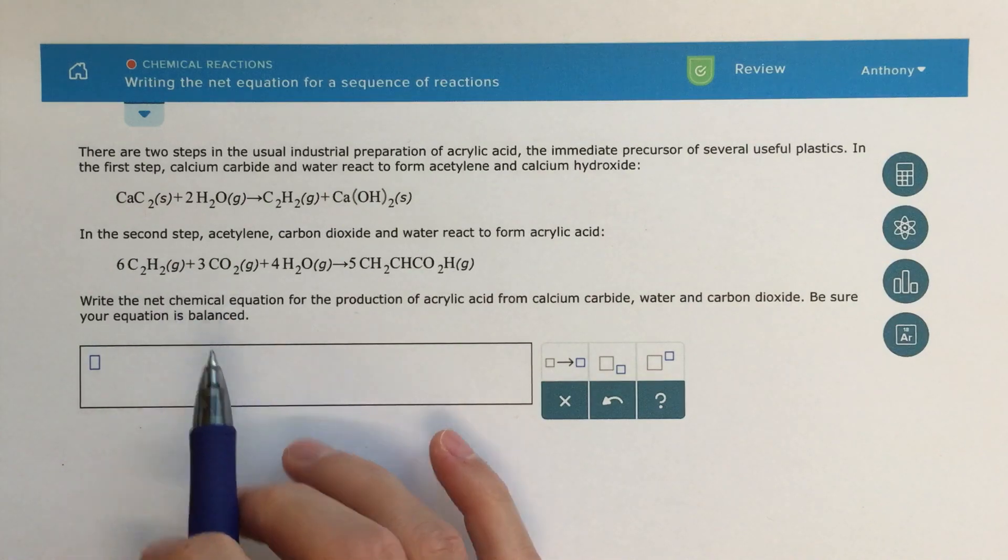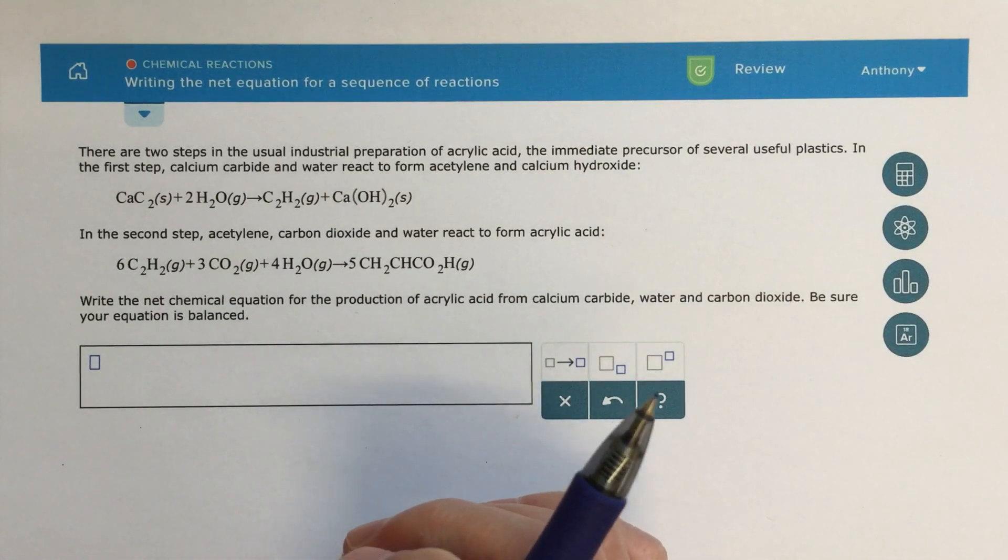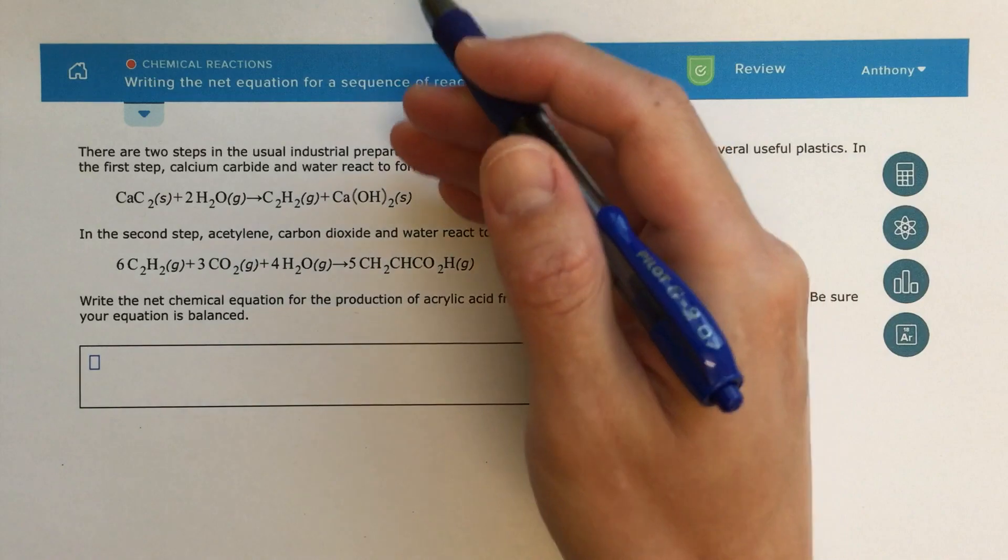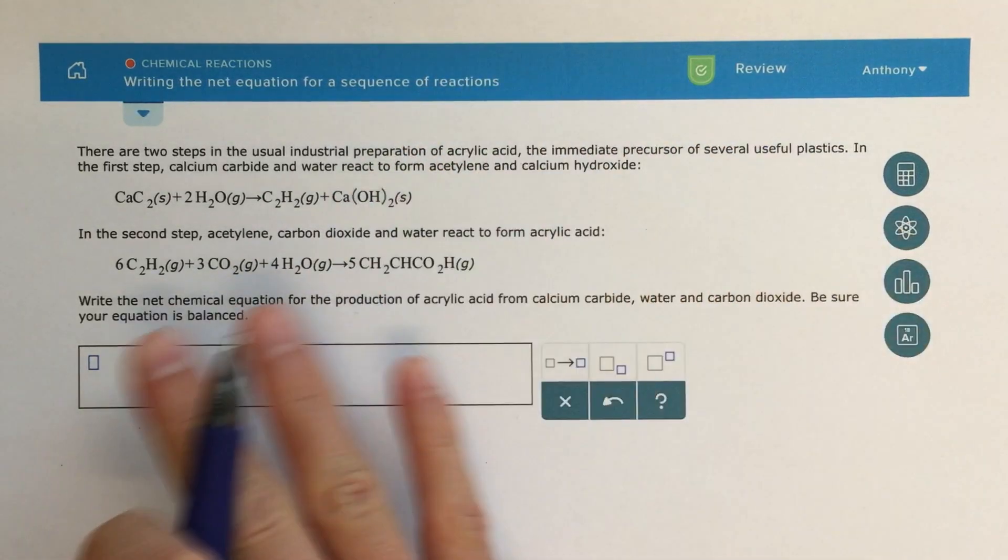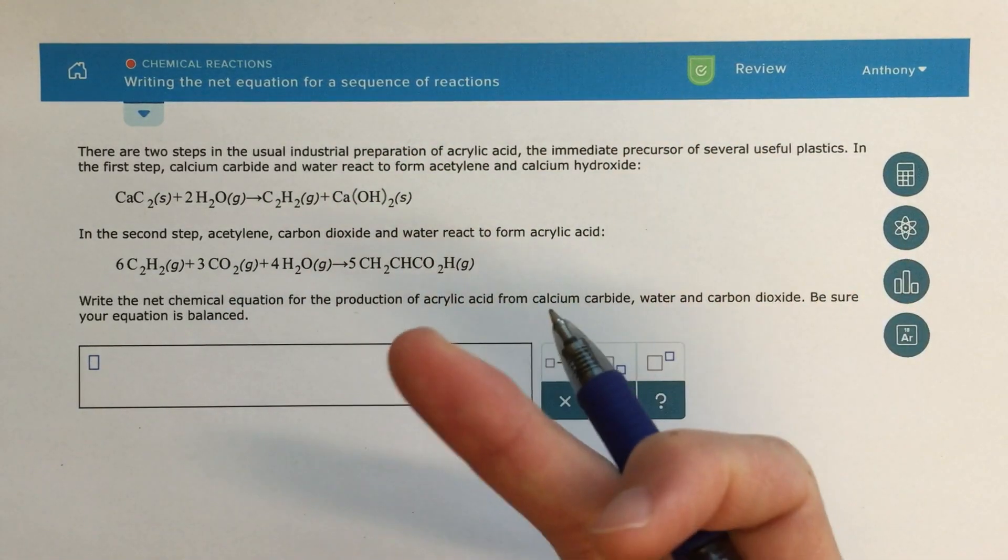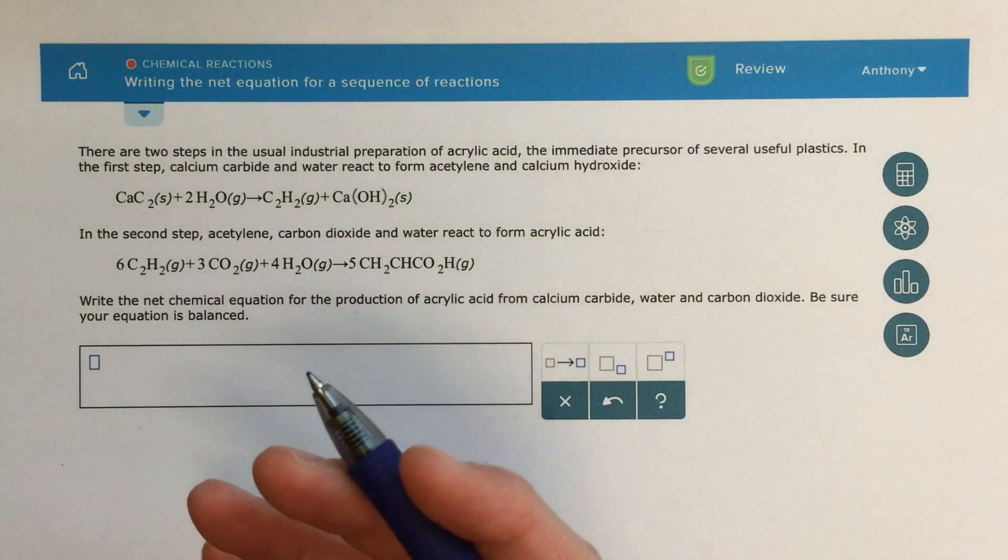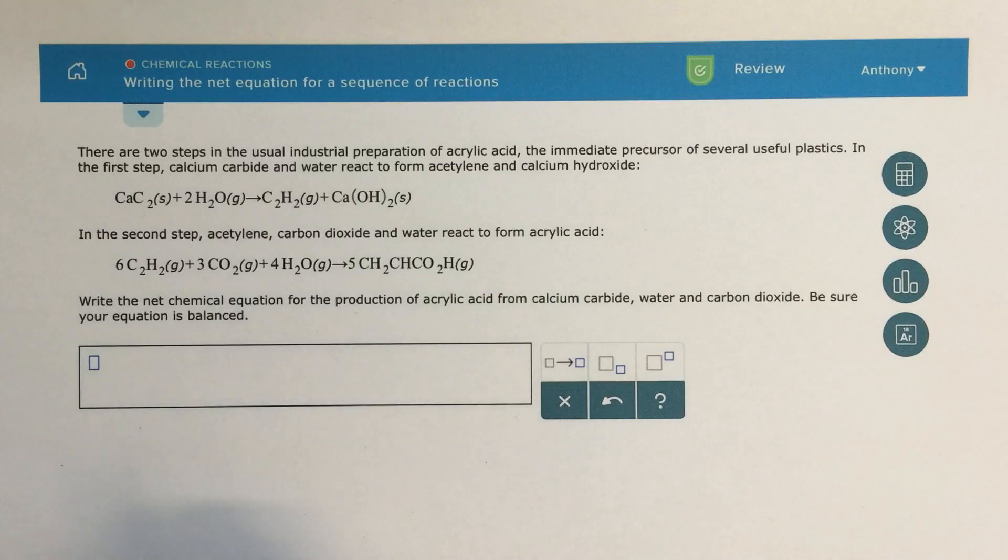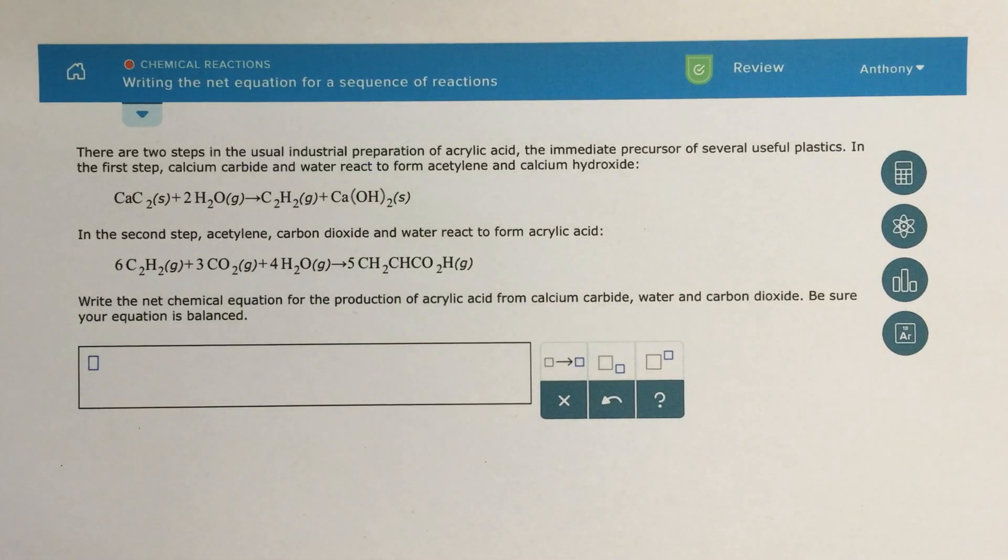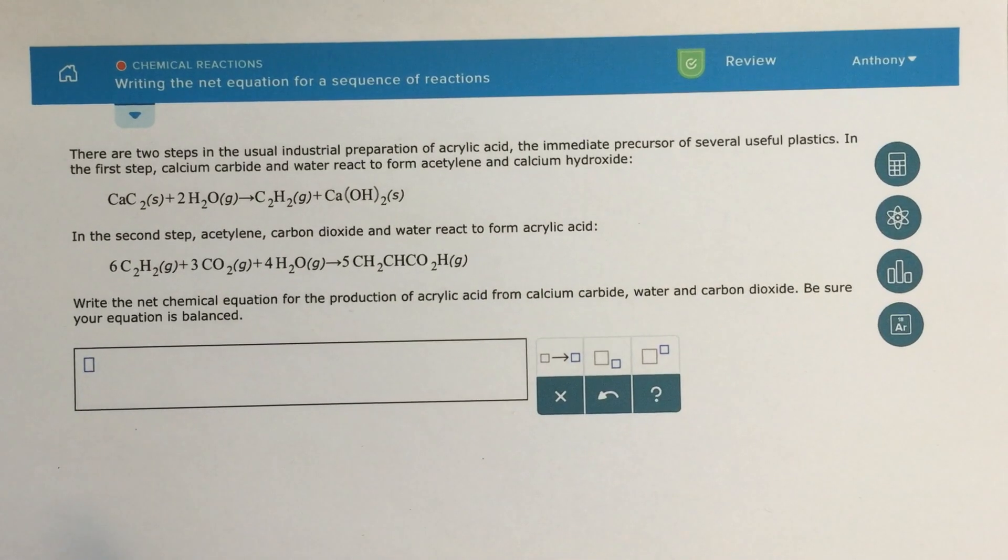Now, this is not the net ionic chemical equation, we're just looking for the net from both of these equations. It's a different concept here, and we would know that simply because we're not seeing the word ionic, right? So, it's a little confusing there, but just make sure that we're paying attention to what type of net equation we're looking for.